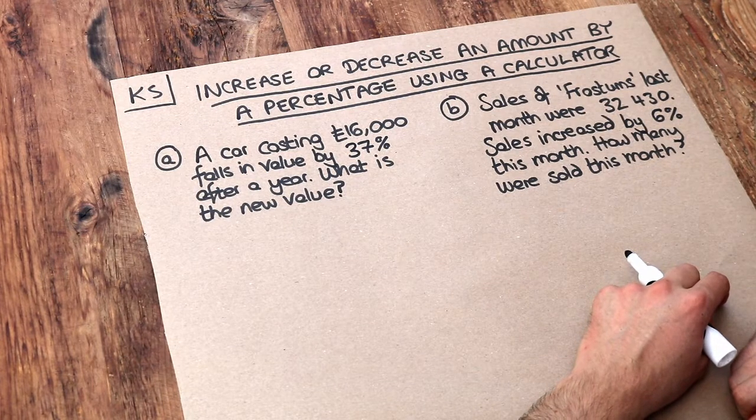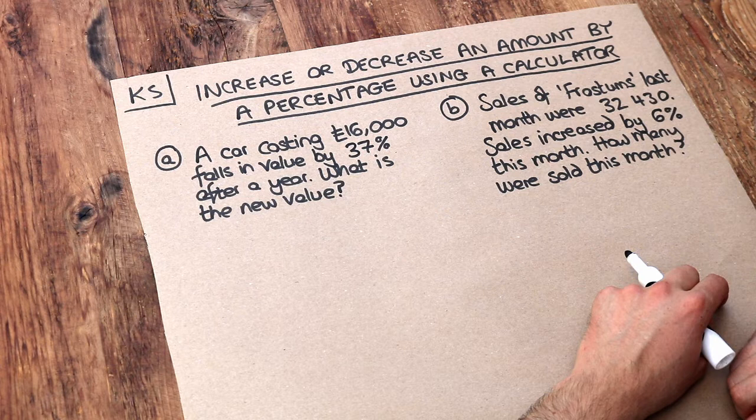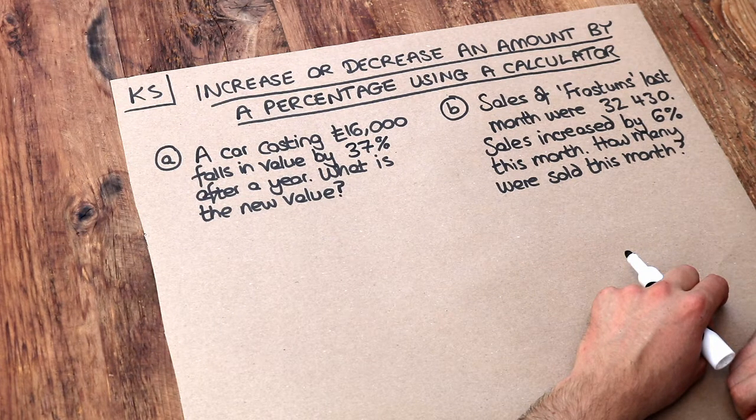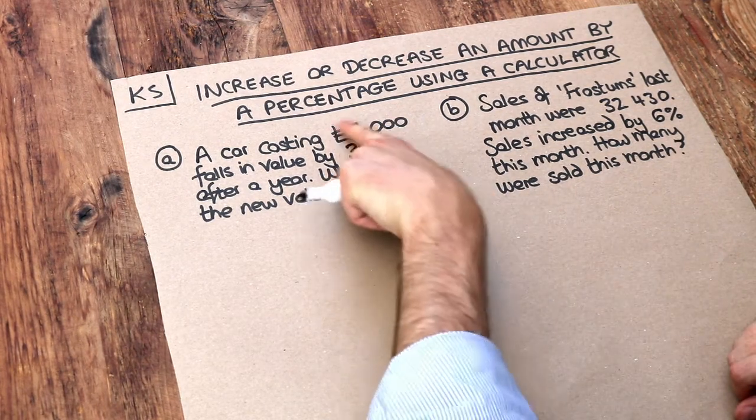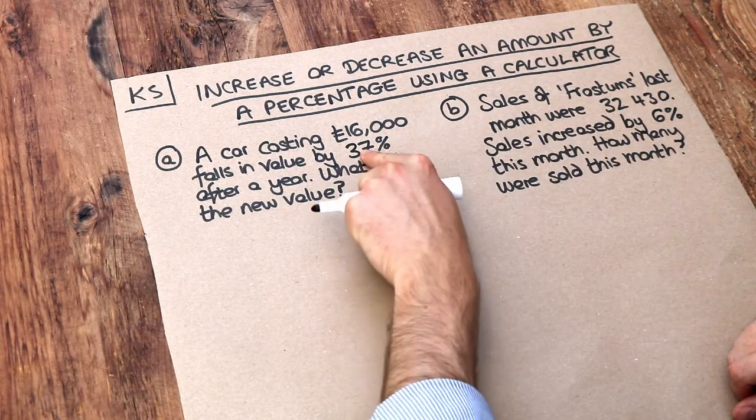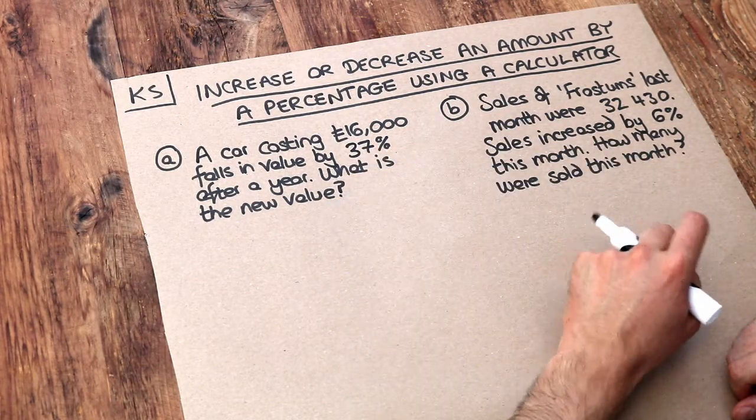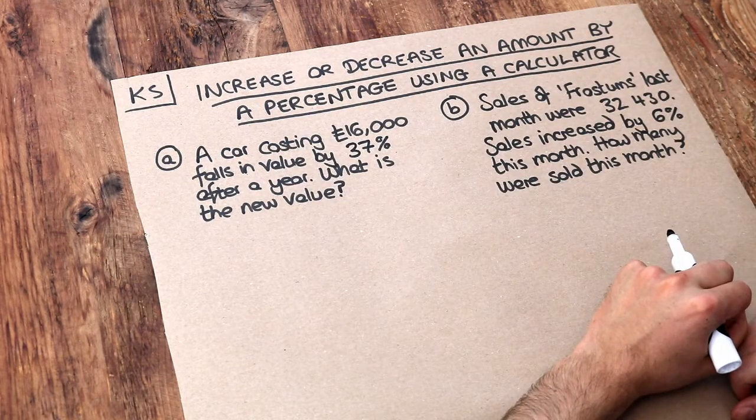A car costing £16,000 falls in value by 37% after a year. What is its new value? Now what we need to do is work out what we need to multiply £16,000 by in order to reduce it by 37%. Because if something falls by 37% we want to reduce it by 37%.